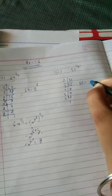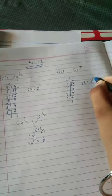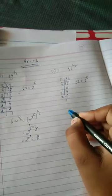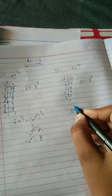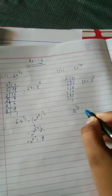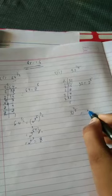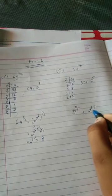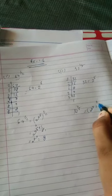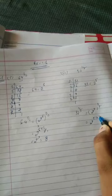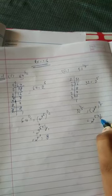So 32 equals 2 raised to 5. For 32 raised to 1 by 5, we write 2 raised to 5, whole raised to 1 by 5 — that is 2 raised to 5 multiplied by 1 by 5. The 5s cancel, so your answer is 2.